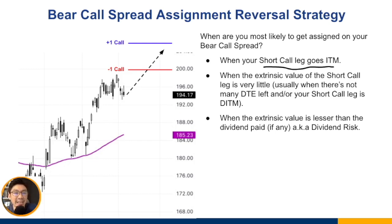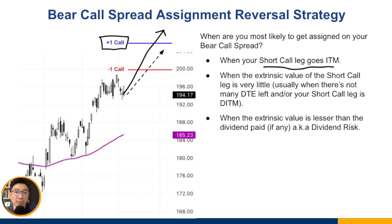Usually when there's not many days to expiration left, or your short call leg is deep in the money — meaning the market has gone all the way past even your long call strike price — you could get assigned pretty early depending on how much extrinsic value is left. Also importantly, if the stock you're trading actually pays a dividend, and the extrinsic value is less than the dividend paid, then there will be a chance for early assignment.